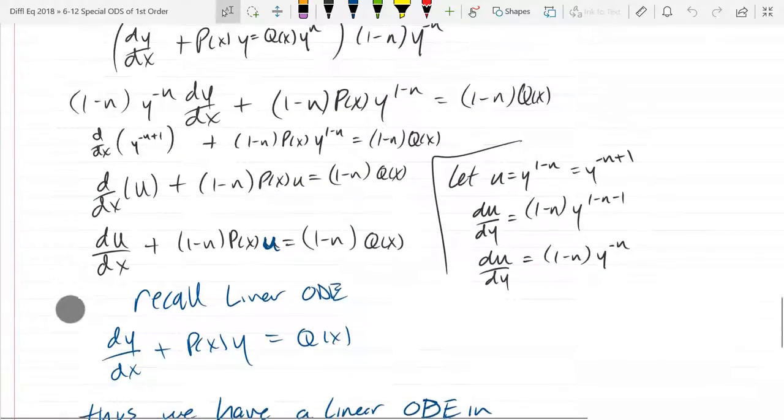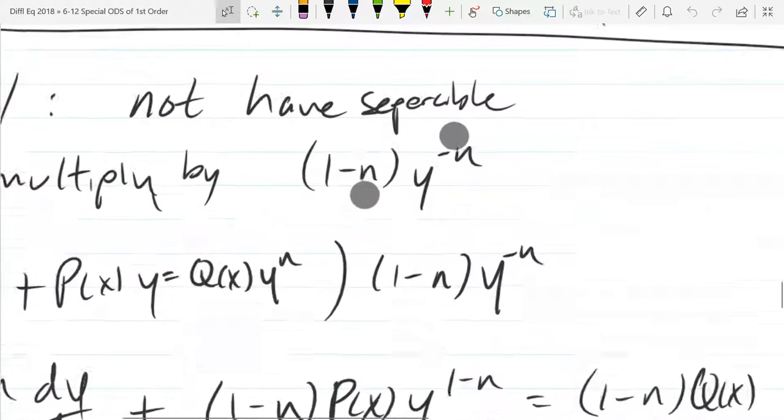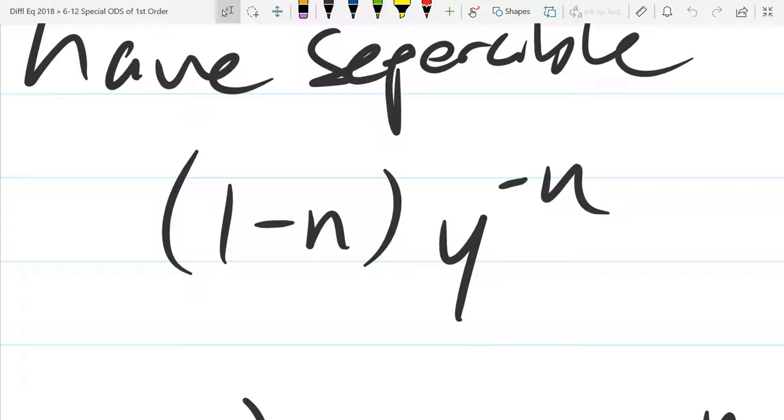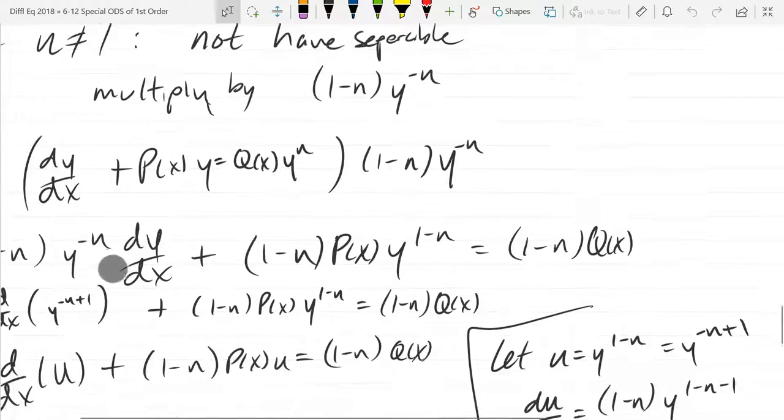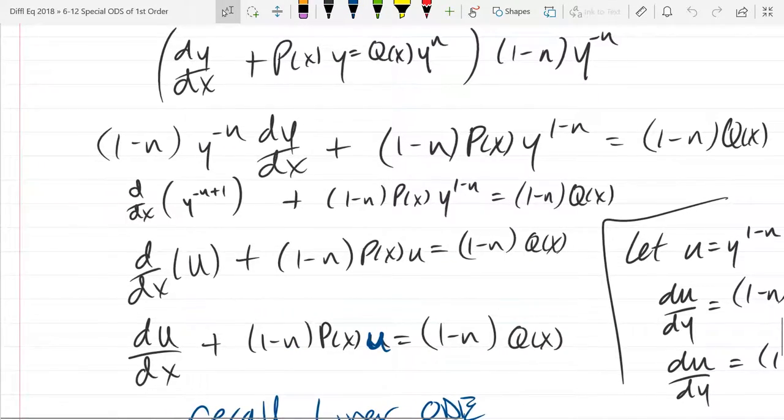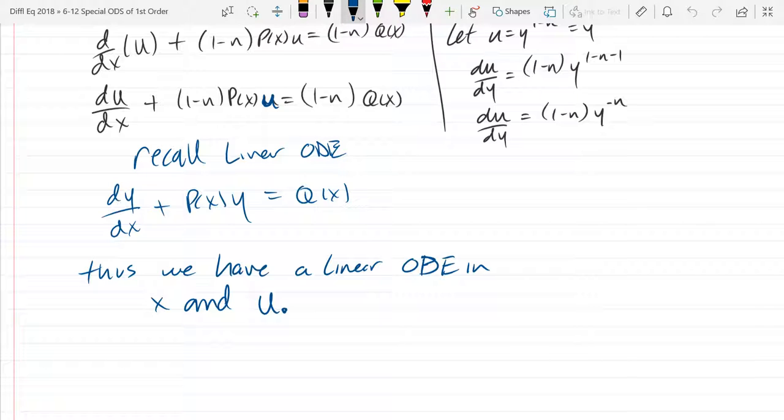So just to review really quickly, we're going to multiply by this really strange term right here. You have to figure out what n is. Once you multiply by that, you will make some substitutions and then you'll have a linear ODE.